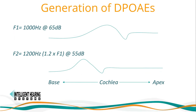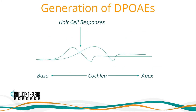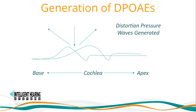Next, the test will begin. DPoAEs are generated by stimulating the cochlea with two frequencies at two intensities, where F2 is 1.22 times F1, and where F1 is typically delivered at 65 dB SPL while F2 is delivered at 55 dB SPL — 10 dB apart. As the signals overlap, hair cell responses generate. These are referred to as distortion product pressure waves, with the strongest intermodulation distortion product emission in the cochlea being generated at 2F1 minus F2, as shown on the frequency spectrum.